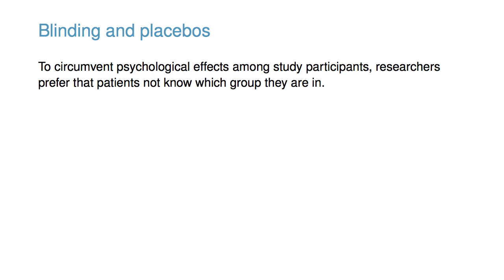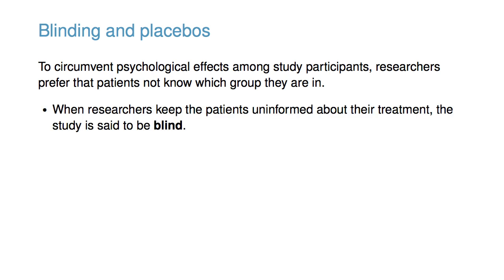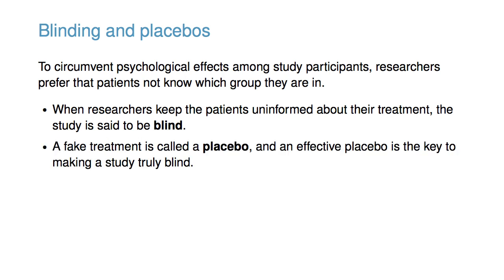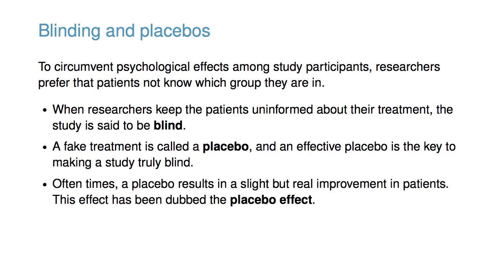Lastly, we will consider the importance of blinding and placebos. To circumvent psychological effects among study participants, researchers prefer that patients not know which group they are in. When researchers keep the patients uninformed about their treatment, the study is said to be blind. A fake treatment is called a placebo, and an effective placebo is the key to making a study truly blind. Oftentimes, a placebo results in a slight, but real, improvement in the patients. This effect has been dubbed the placebo effect.